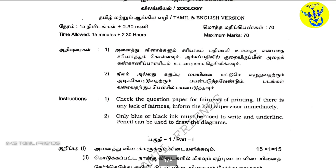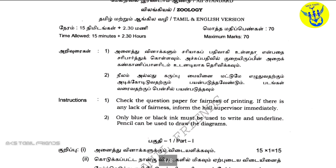In the second part, the color is yellow. They will be green. You can also see the pencil. Check the question paper for fairness of printing. If there is any issue, inform the hall supervisor immediately. Only blue or black ink is to be used to write, and an underlined pencil to draw diagrams.